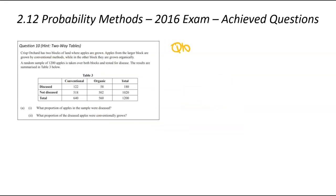We're now looking at question number 10. And the hint for this one is pretty obvious. Two-way tables. We're now looking at another orchard. Apples from a larger block are grown via conventional methods, while the other block is grown organically. That explains the top part of our axes, conventional growth or organic. Of a random sample of 1,200 apples, they were tested for disease. The apples either were diseased or were not diseased. We're trying to find, for question I, what is the probability that a random apple was diseased?